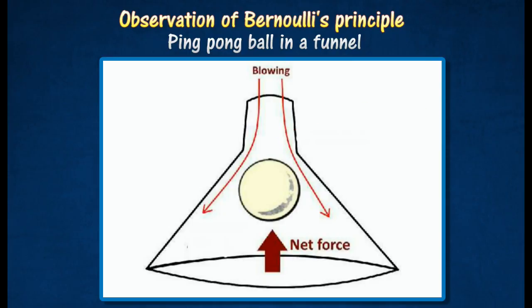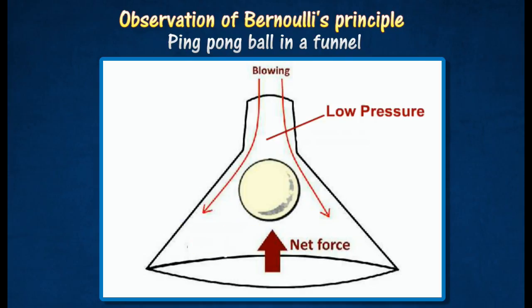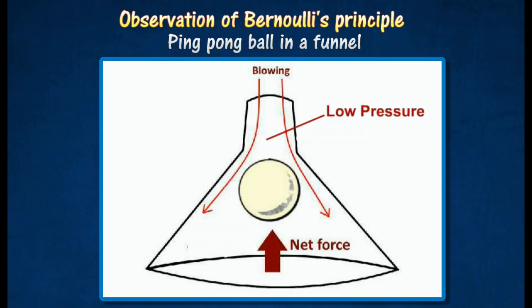The air flows around the ping pong ball at high speed and creates a region of low pressure. The air beneath the ball is at atmospheric pressure, and a net upward force holds up the ping pong ball.